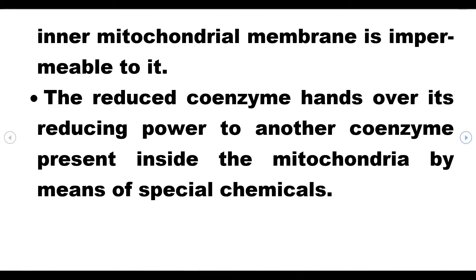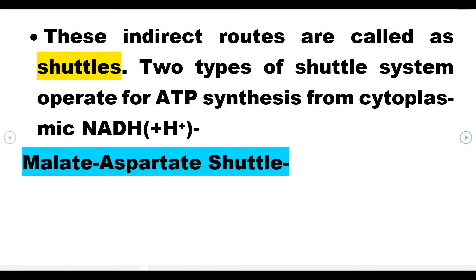So the reduced coenzyme hands over its reducing power to another coenzyme present inside the mitochondria by means of special chemicals. These intact routes are called shuttles. Two types of shuttle systems operate for ATP synthesis from cytoplasmic NADH plus H plus.